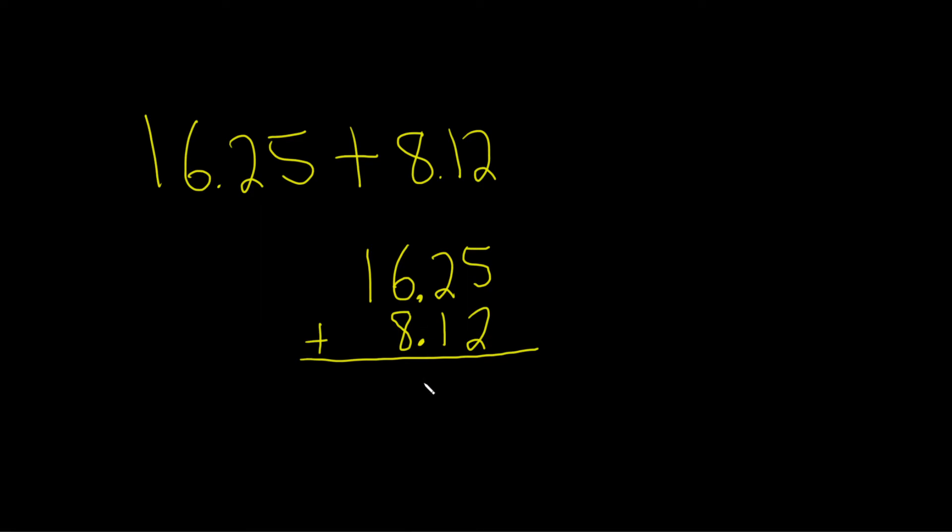You can actually bring down the decimal too if you like. I usually write it at the end, but you can write it first if you want. So 5 plus 2 is 7. You just add them up. 2 plus 1 is 3. Then you write the decimal.